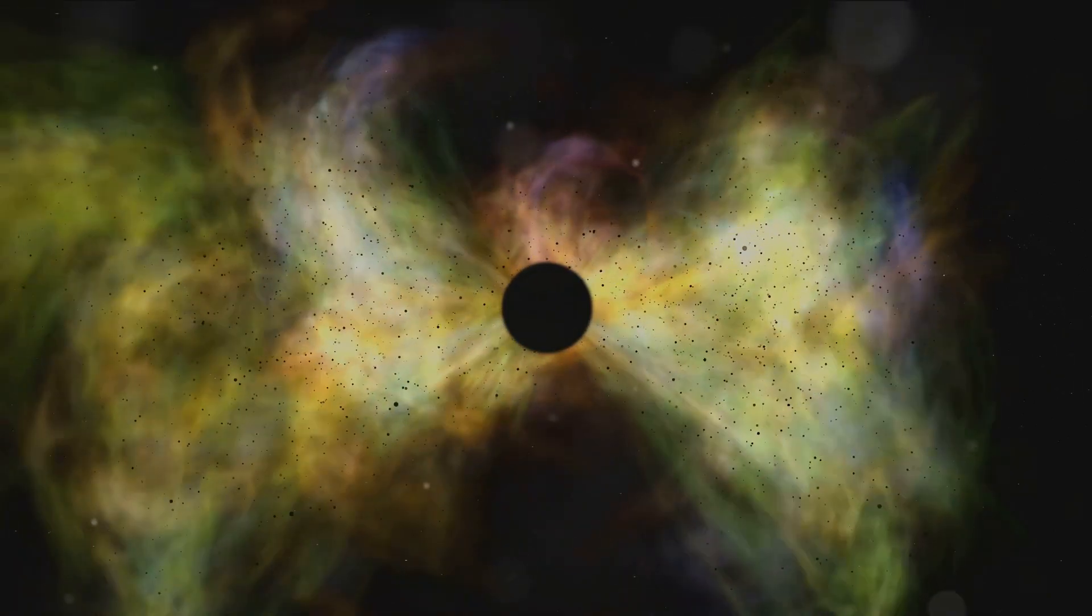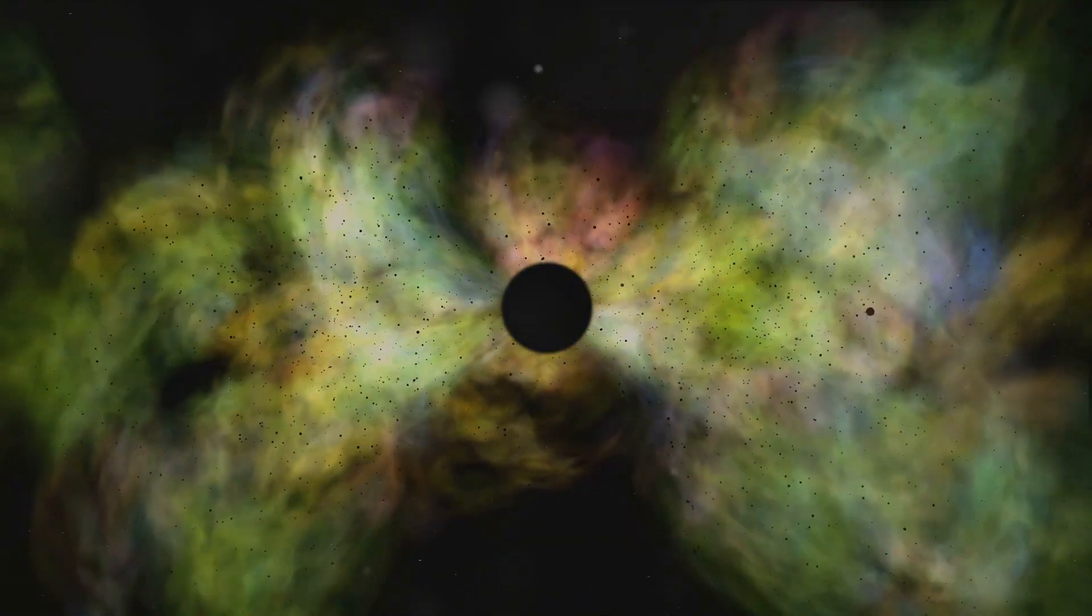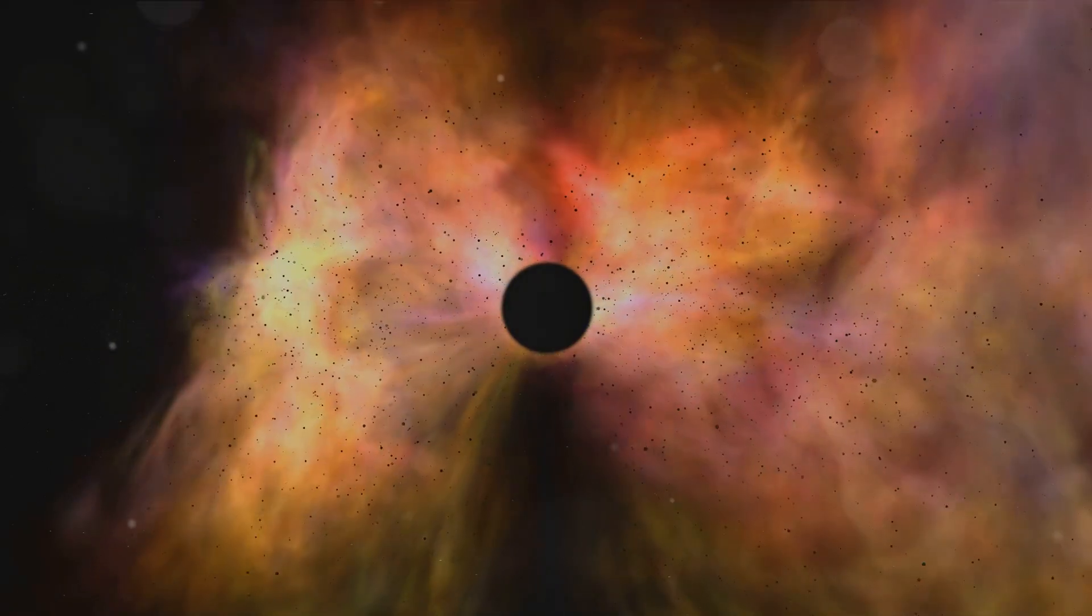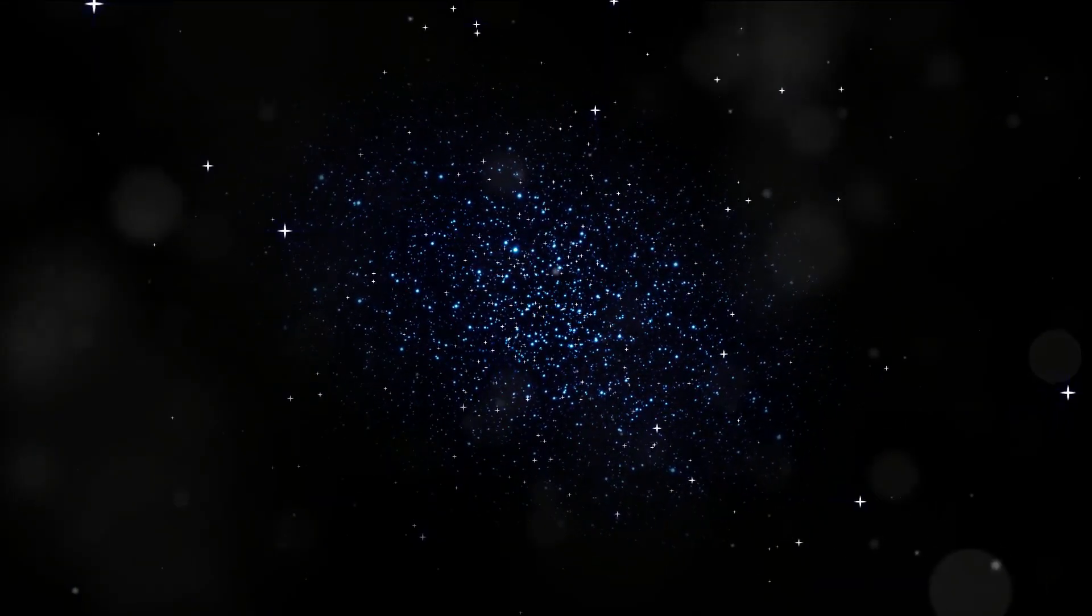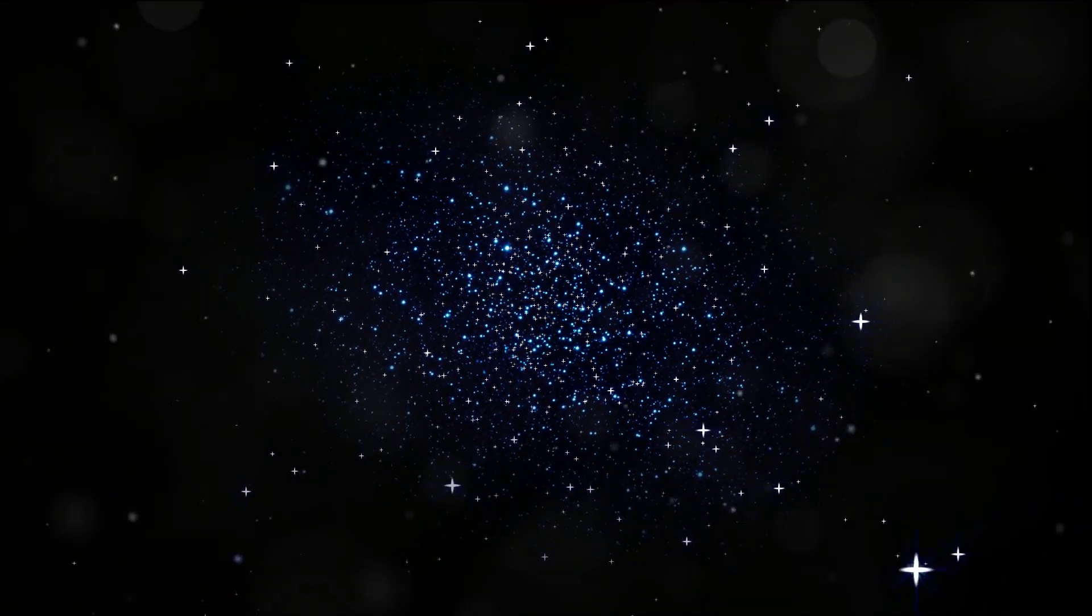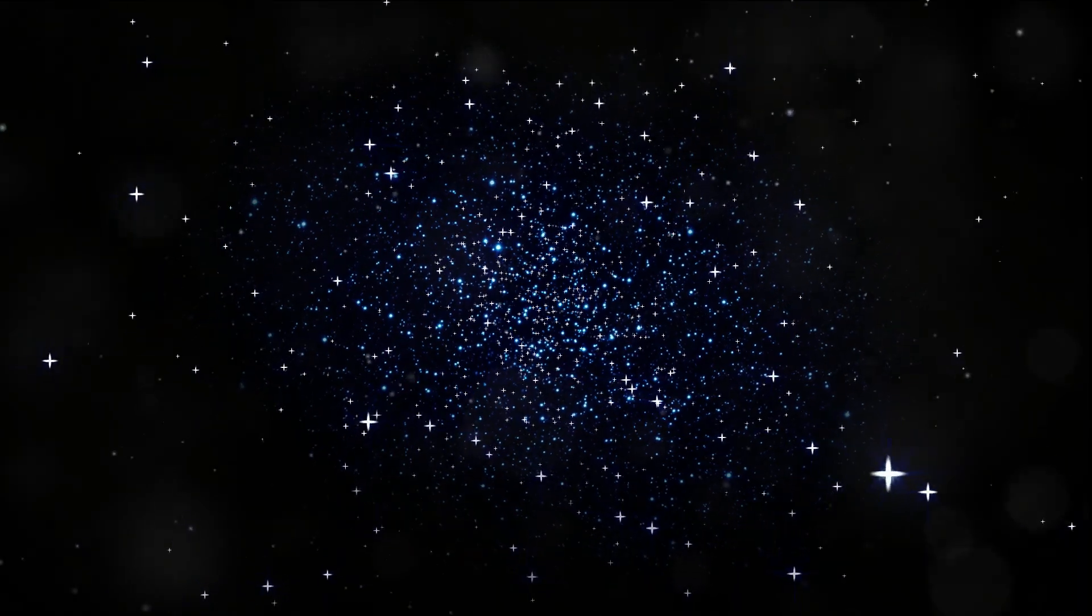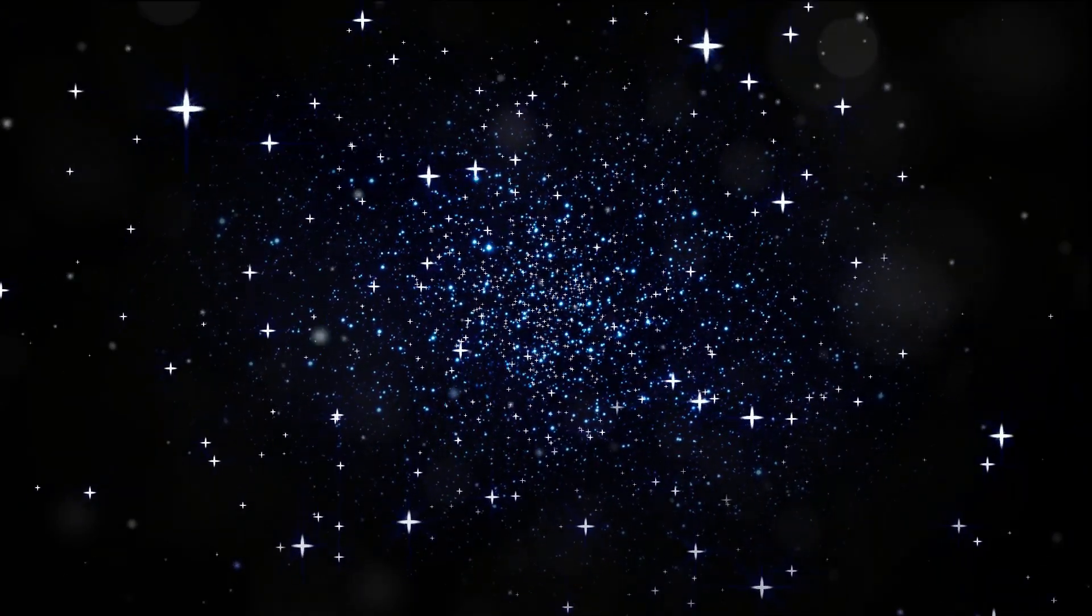If our sun were suddenly replaced by a neutron star, its gravitational pull would be so strong that the earth would be sucked in almost instantly. And yet, despite their destructive power, neutron stars also hold the key to creation. Their extreme conditions forge elements that are impossible to create under less intense circumstances. These compact stars then set the stage for some of the most spectacular events in the universe.